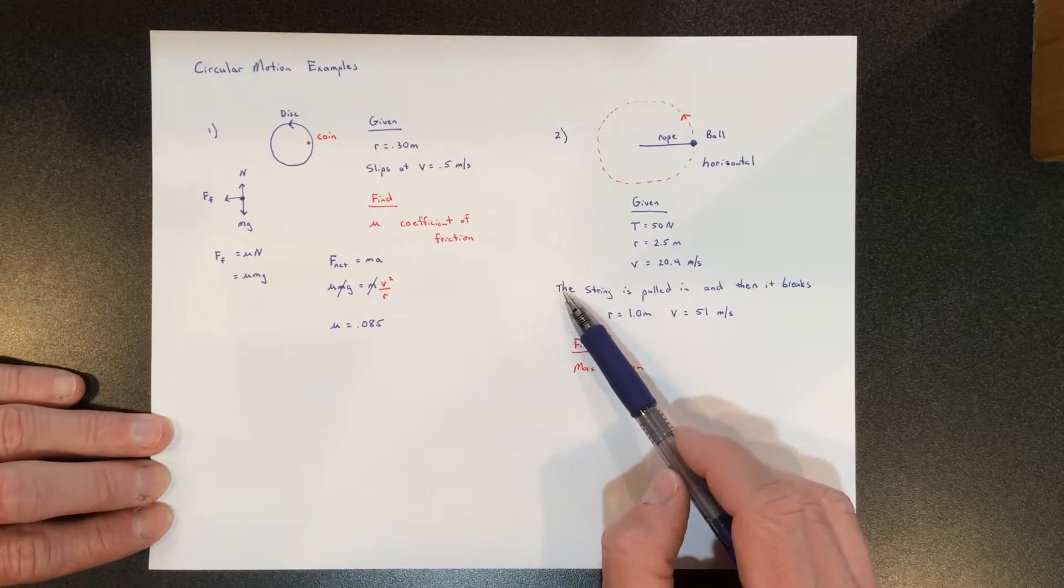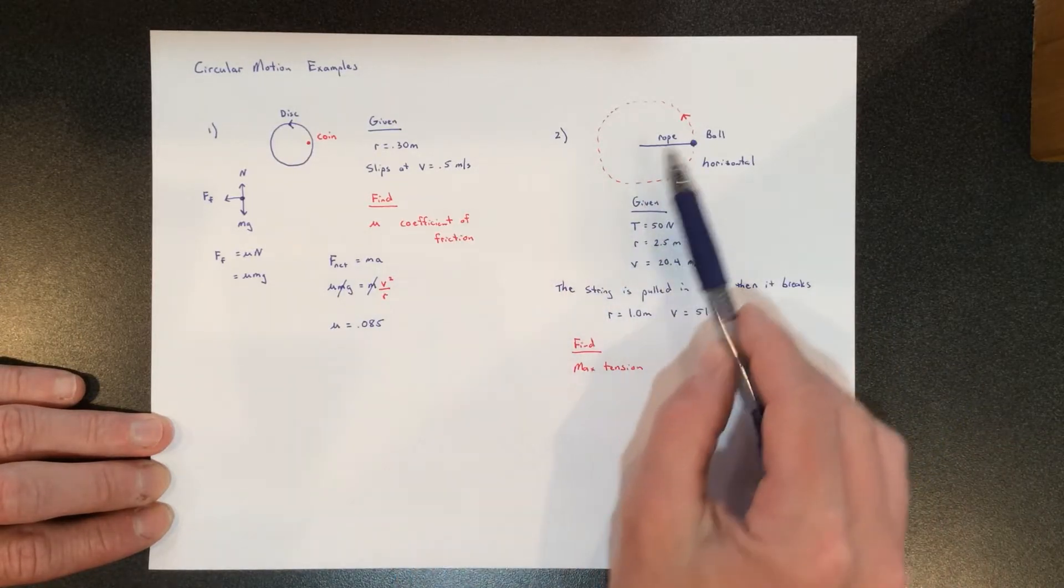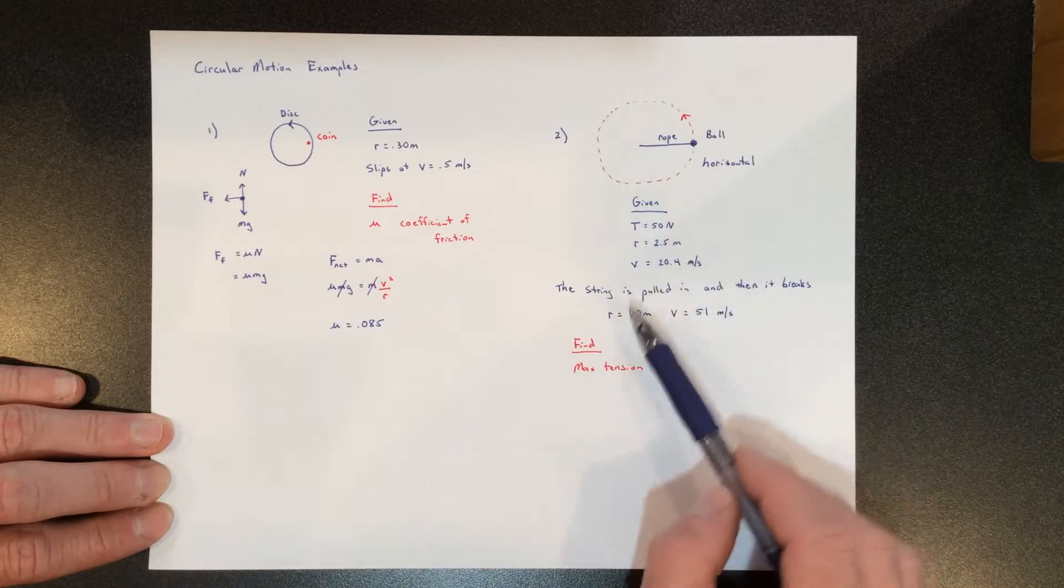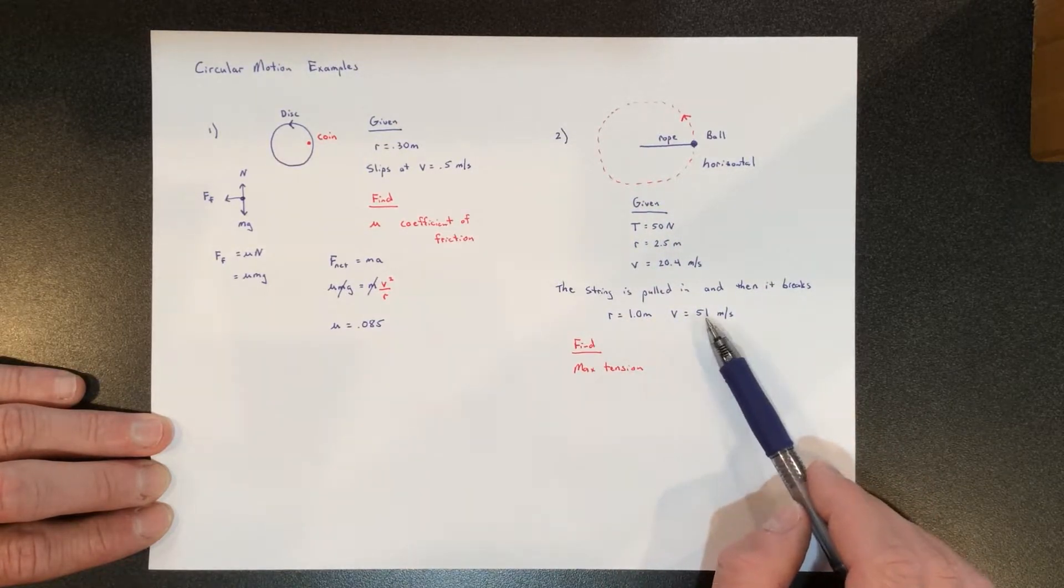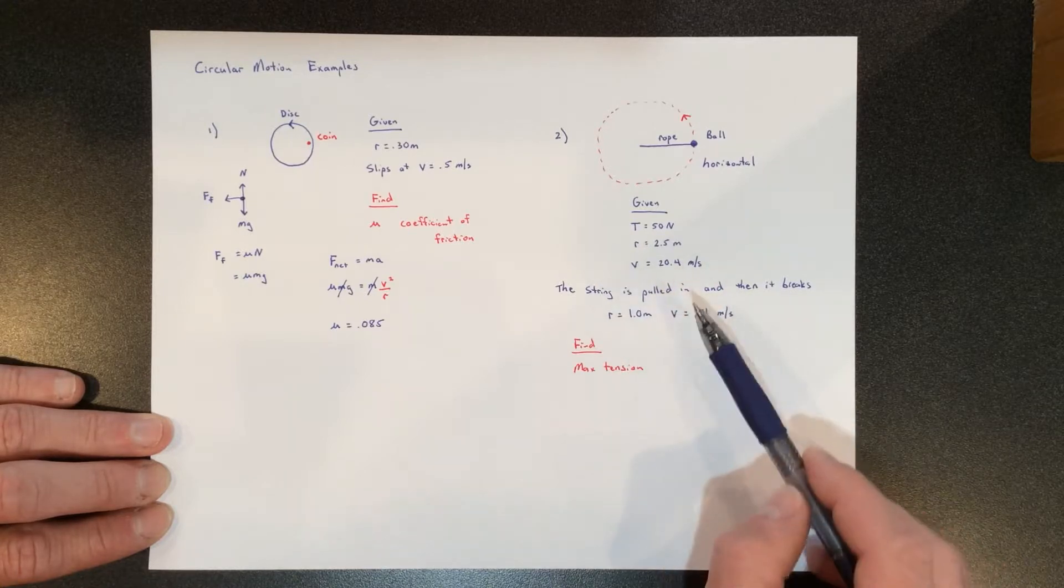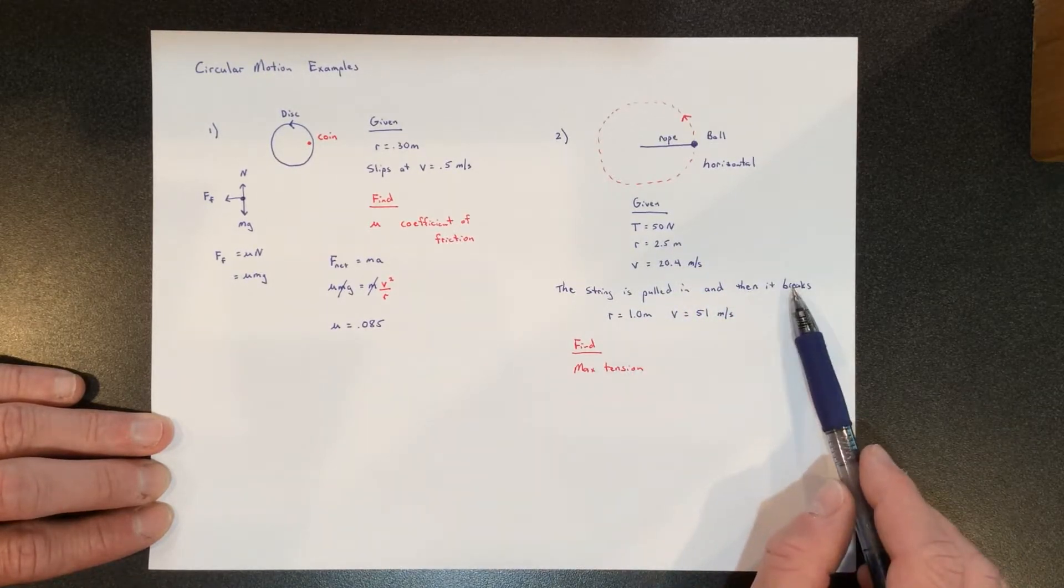Now we want to find the maximum tension that can be applied to this situation. We know that when the string is pulled in—effectively shortening the rope to an r value of one meter—it's going to speed up to 51 meters per second, and at that moment it breaks.